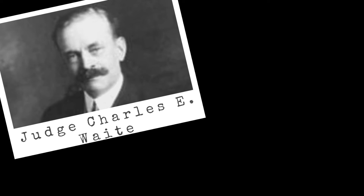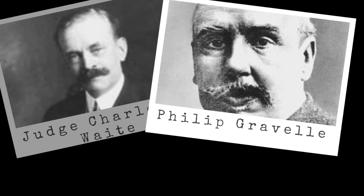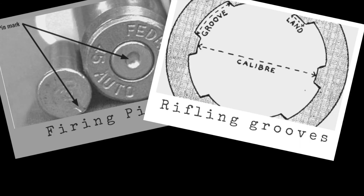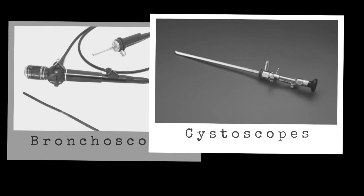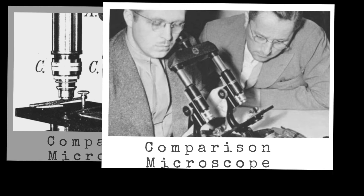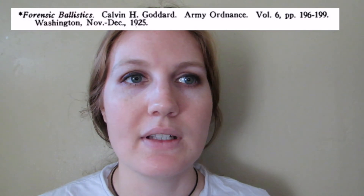The first foray into ballistic identification was done by Judge Charles E. Waite, who would later become Goddard's colleague, along with Philip Gravel and Captain E.C. Crossman. They would go on to develop comparative methods to identify unique characteristics left by firing pins, rifling grooves, and extractor claws on fired bullets and cartridge casings. With the use of modified medical tools like brachioscopes and cytoscopes, Goddard was also able to inspect defects of rifled gun barrels, and he helped adapt the microscopy technique that allowed investigators to simultaneously compare two bullets.